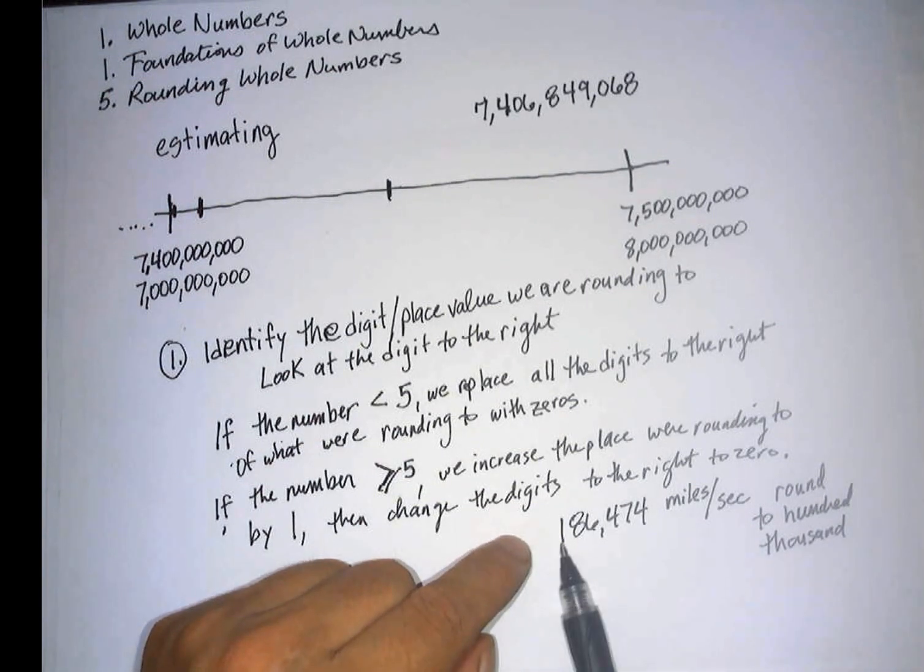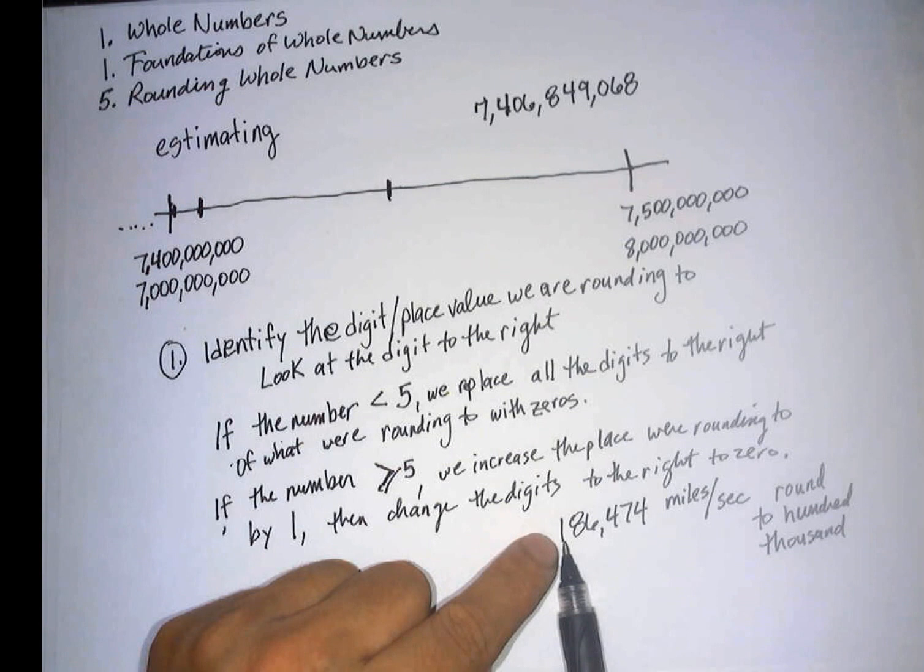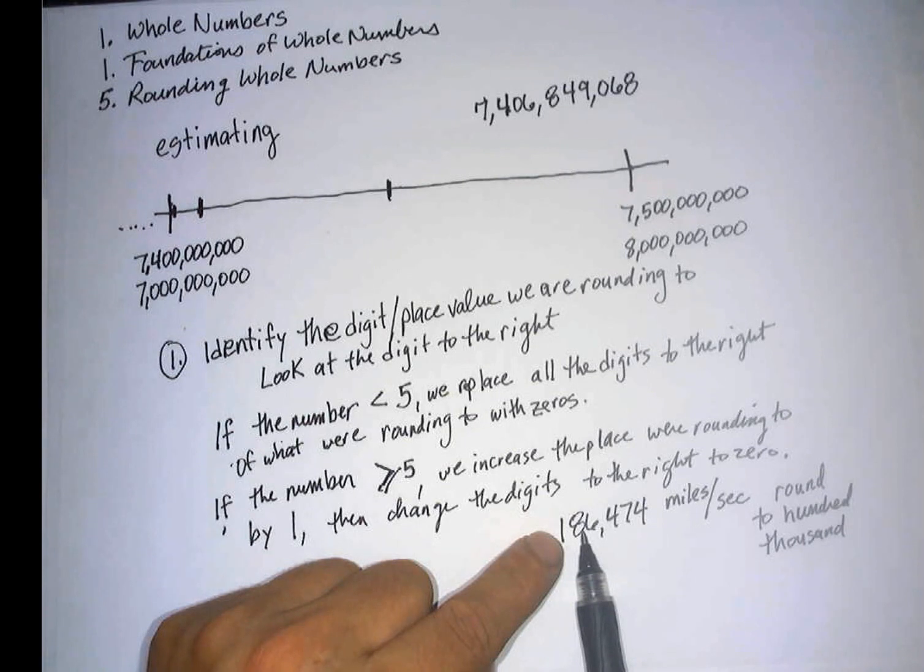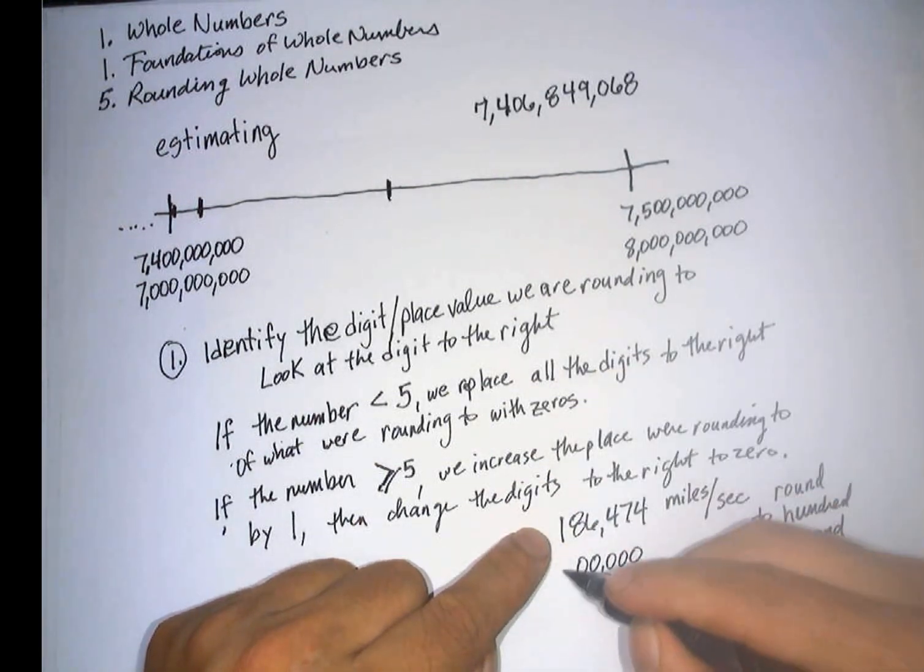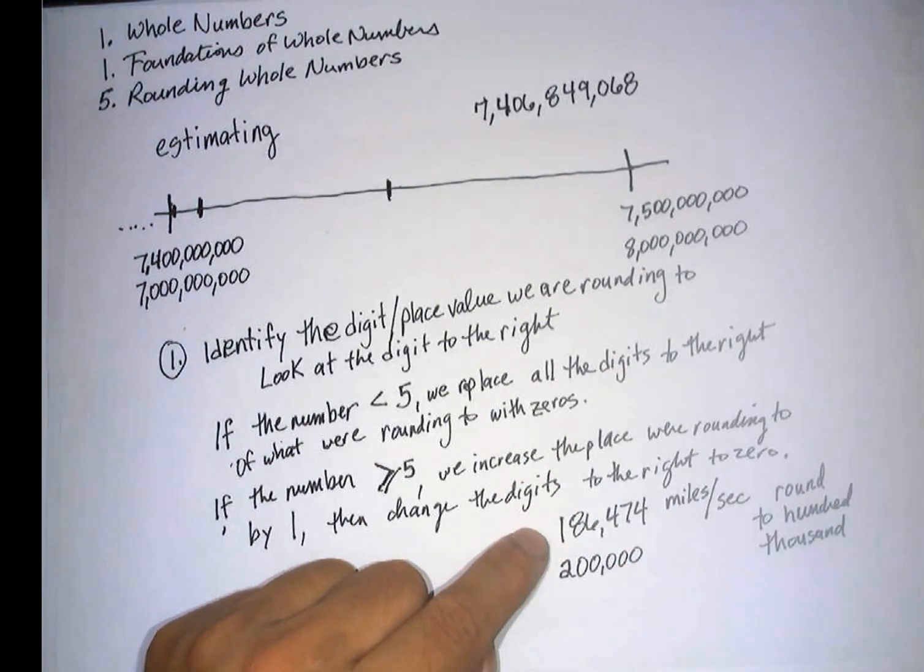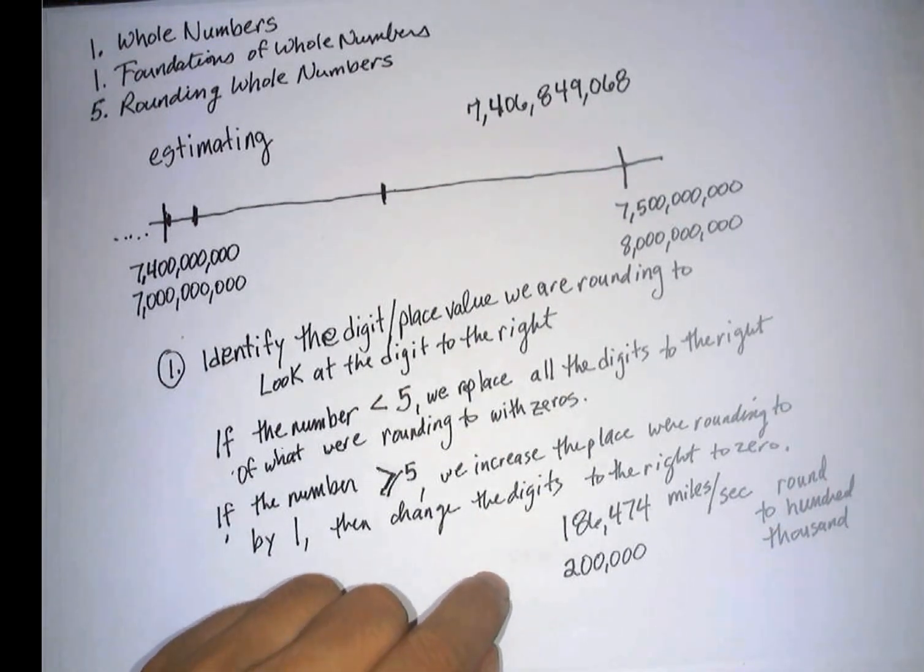Okay, so we find the place, we find the digit that we're rounding to. So we're rounding to the 100,000s, and we look at the digit to the right. It is greater than or equal to 5, it's 8. 8 is greater than or equal to 5. So we replace all these digits with zeros, and we increase this one by 1. So rounded to the nearest 100,000 would be 200,000 miles per second.